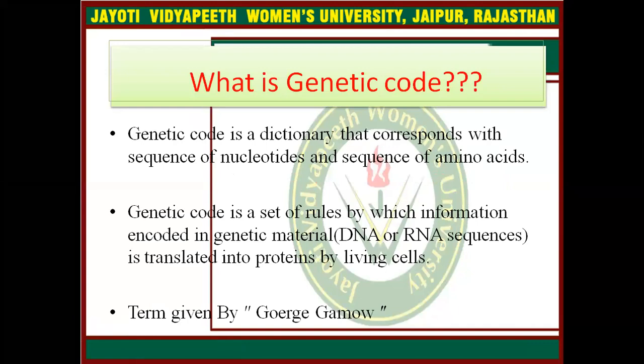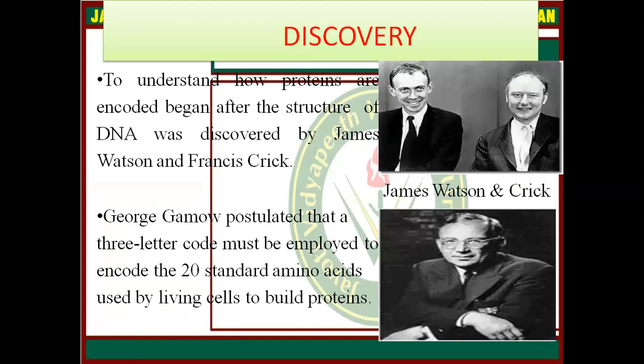What is genetic code? Genetic code is a dictionary that corresponds with the sequence of nucleotides and the sequence of amino acids. Genetic code is a set of rules by which information encoded in genetic material — meaning DNA or RNA sequences — is translated into protein by living cells.